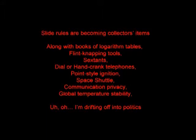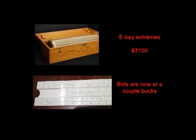So they're becoming collector's items, and lots of other things. We have GPS rather than sextants. These are readily available on eBay. Here's the highest-priced one a couple of days ago when I turned this in late. It was $3,100, but if you want just a simple one to practice up on, those are only going for a couple of bucks.